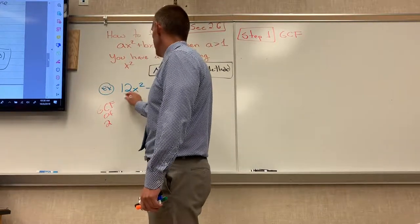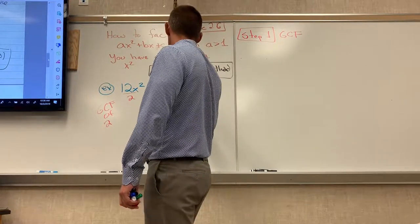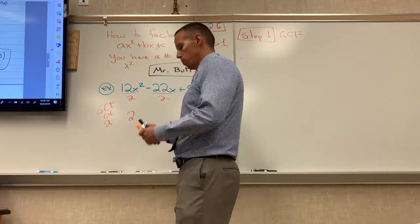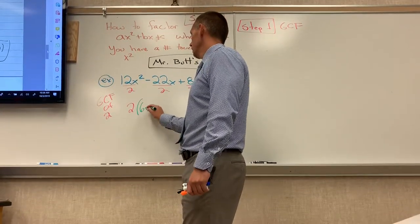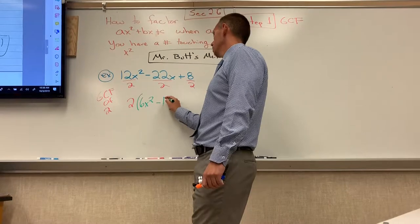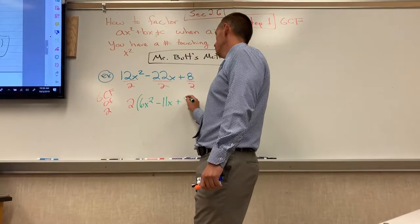So we're going to divide everything by 2. And now we have 6x squared minus 11x plus 4.